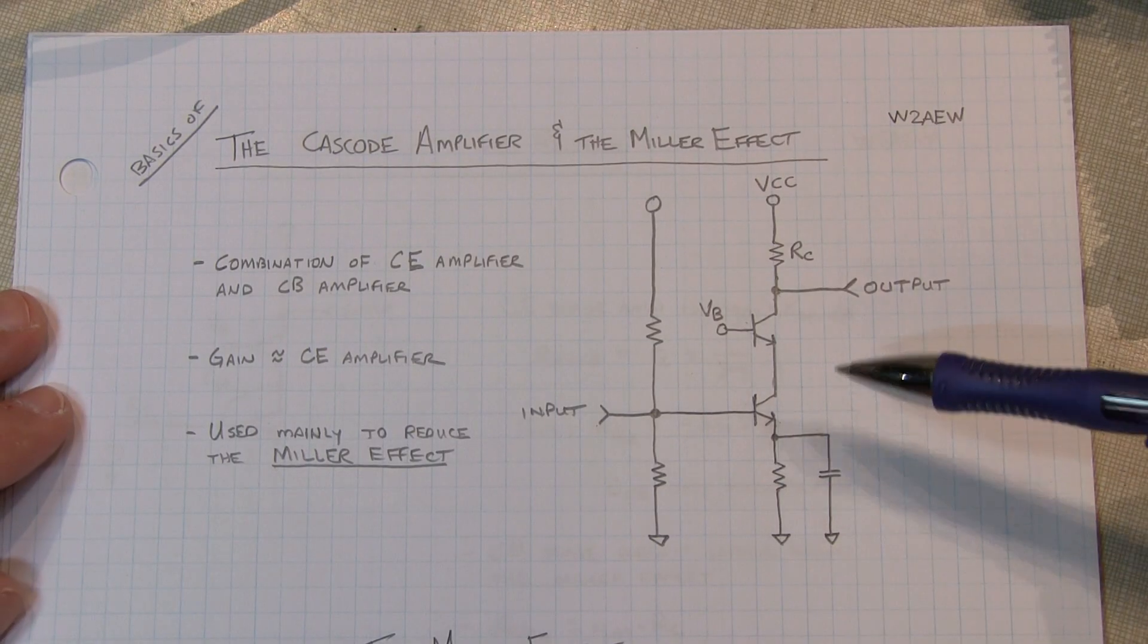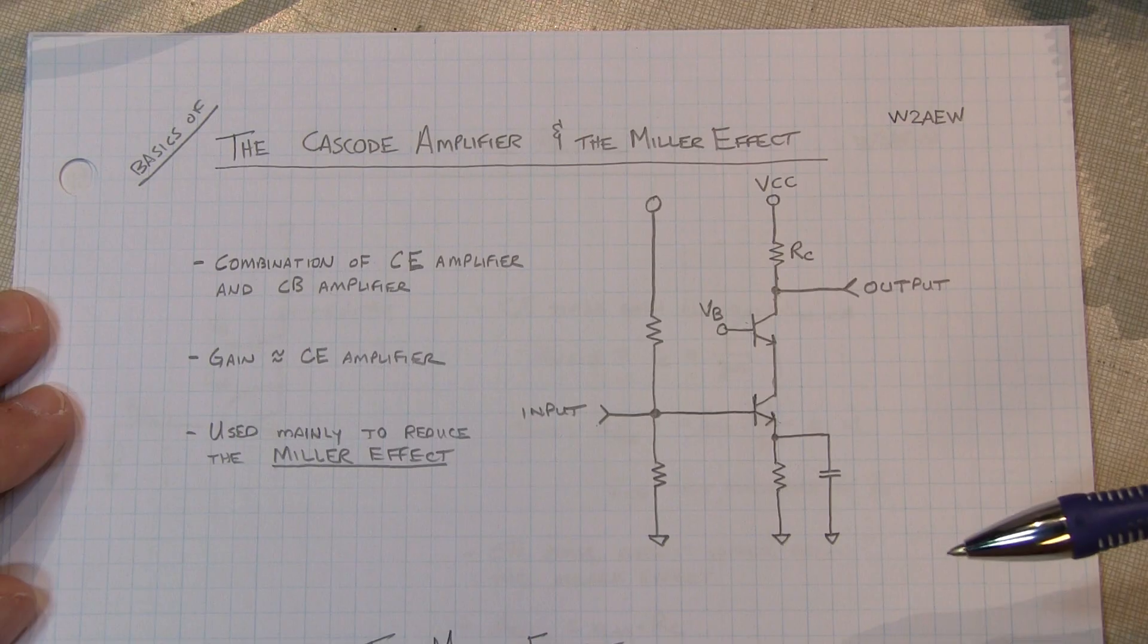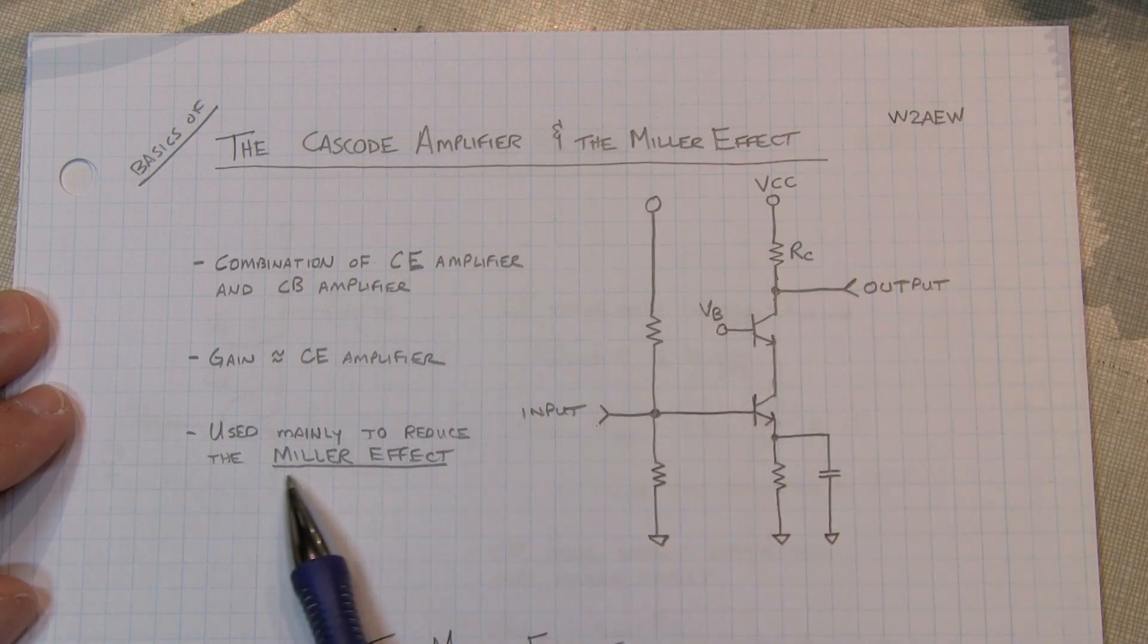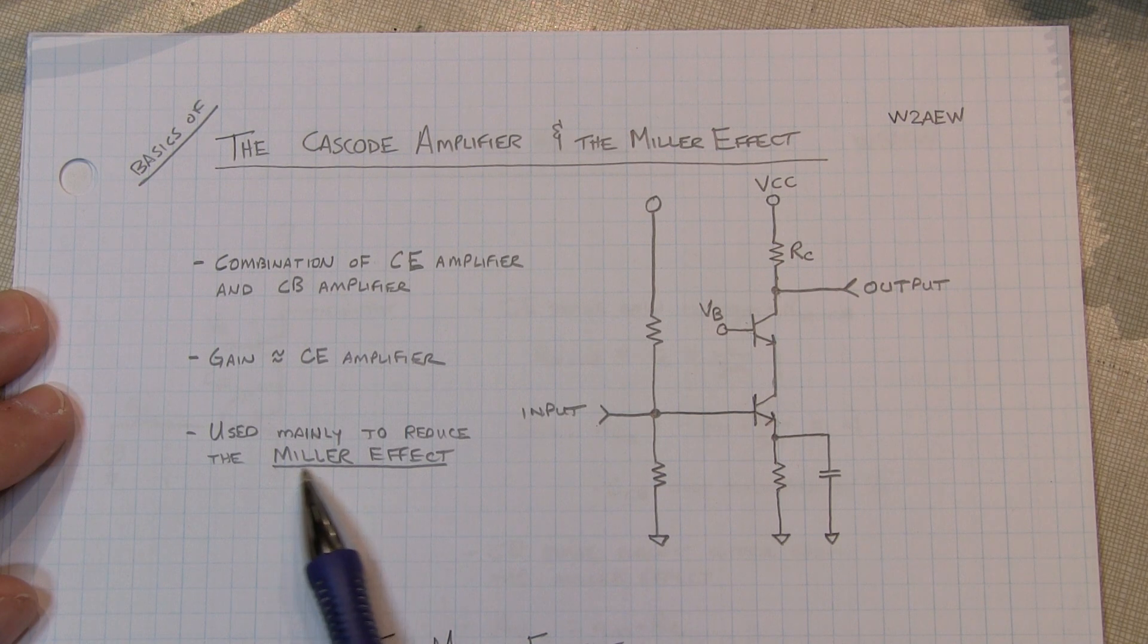So if the gain is the same with a Cascode, why do we bother using a Cascode? And the answer is it's often used to combat something called the Miller effect. So we need to talk about what the Miller effect is and see how this circuit can help us.